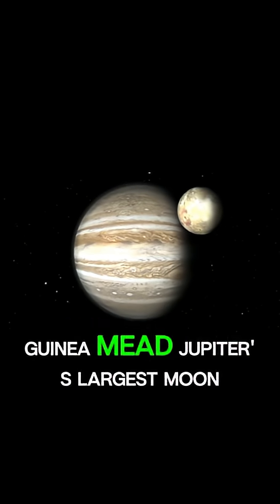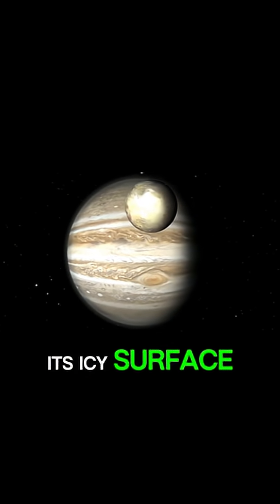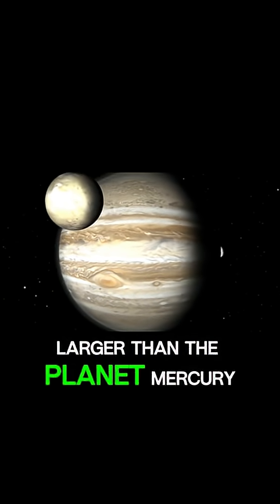Fact number four: Ganymede, Jupiter's largest moon, contains a salty ocean beneath its icy surface that holds more water than all of Earth's oceans combined, and it is even larger than the planet Mercury.